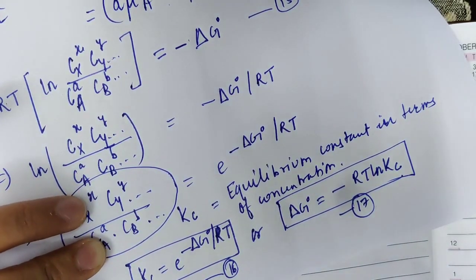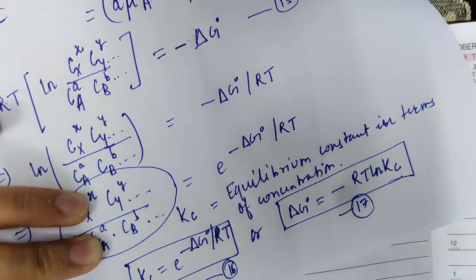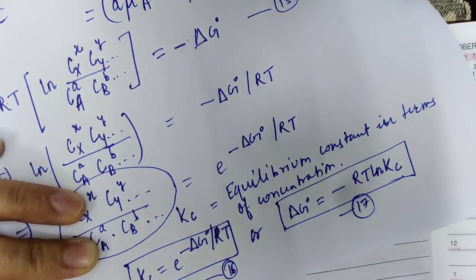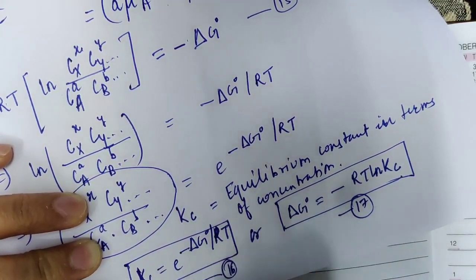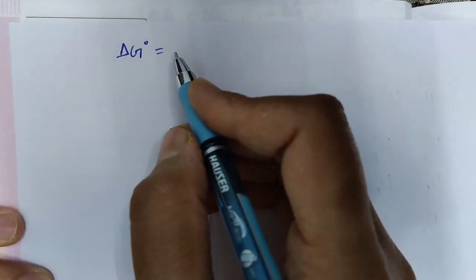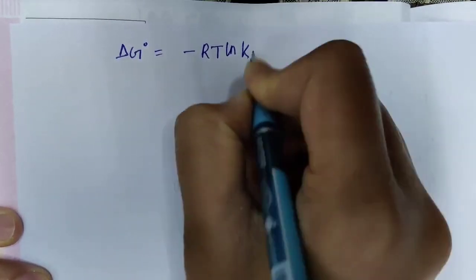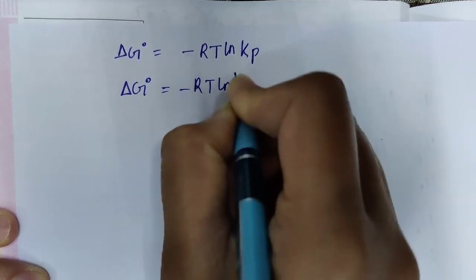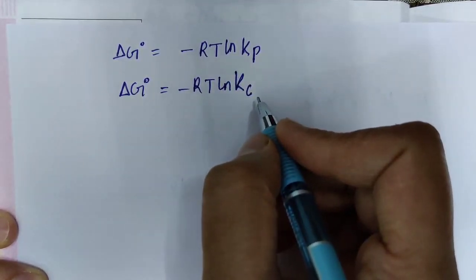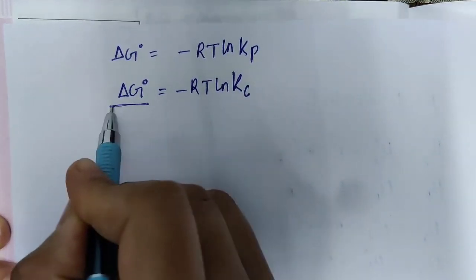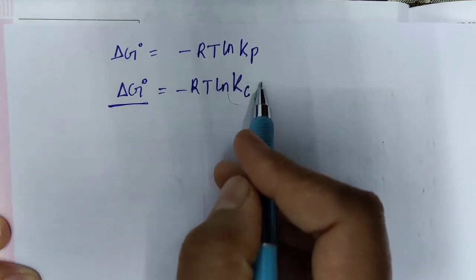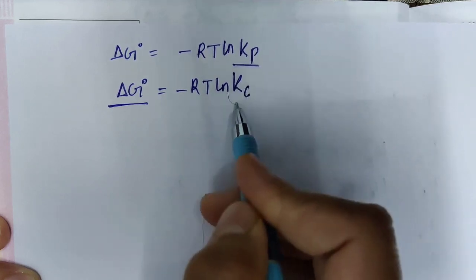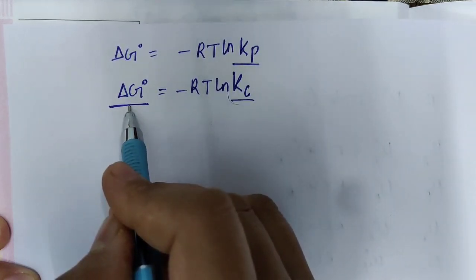This completes the thermodynamic derivation of the equilibrium constant. The two relations established between equilibrium constant and Gibbs free energy are: Delta G naught equals minus RT ln KP — equilibrium constant in terms of partial pressure — and Delta G naught equals minus RT ln Kc — equilibrium constant in terms of concentration. If we know Delta G naught we can calculate the equilibrium constant, and vice versa.